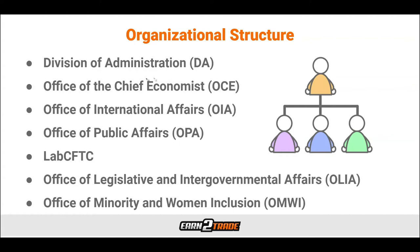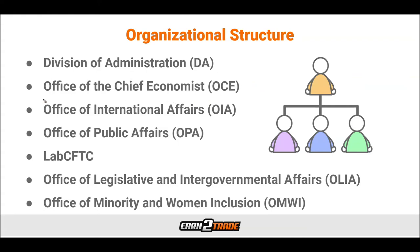Next comes the Division of Administration, otherwise known as the DA. The DA manages internal functions like finance, security, and operations. Then we have the Office of the Chief Economist, known as the OCE. This office is primarily for the conduction of research, provides economic advice on the implementation of any new regulation, and is also responsible for training staff.